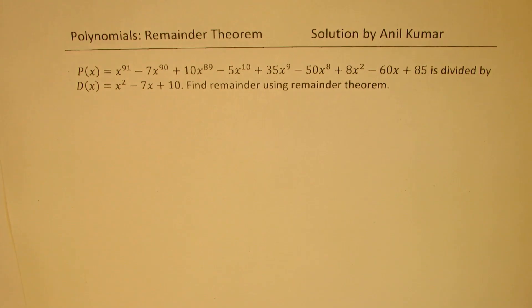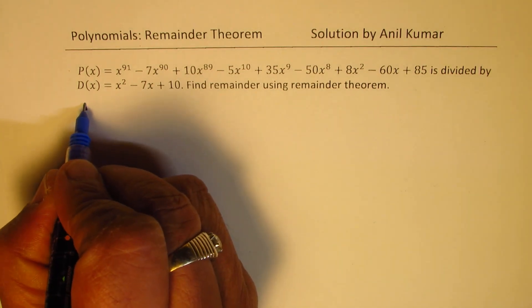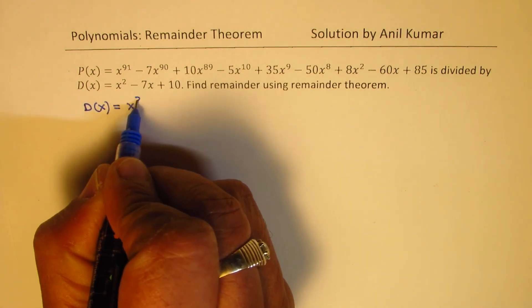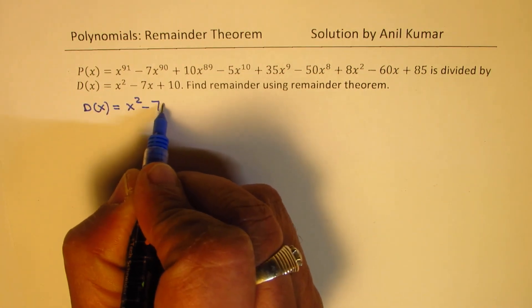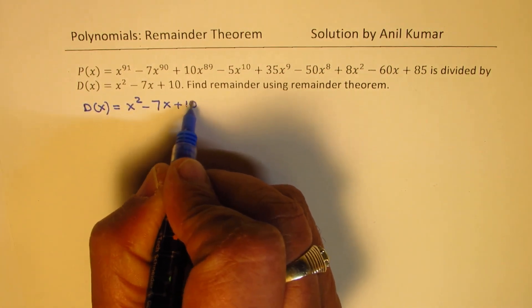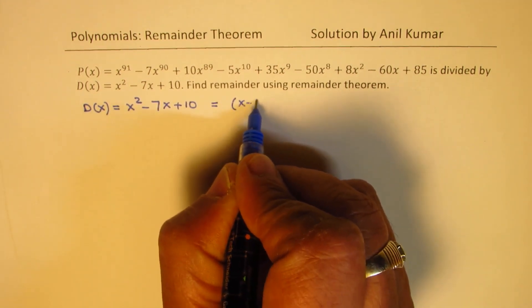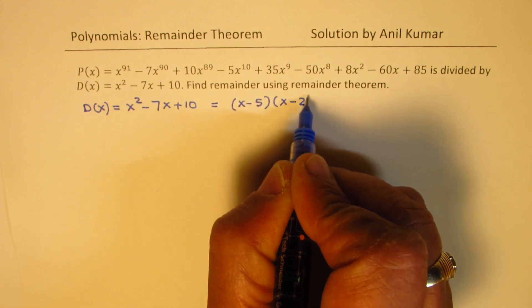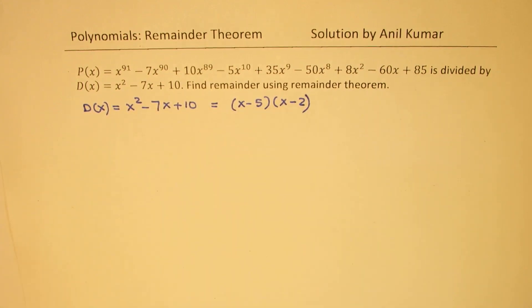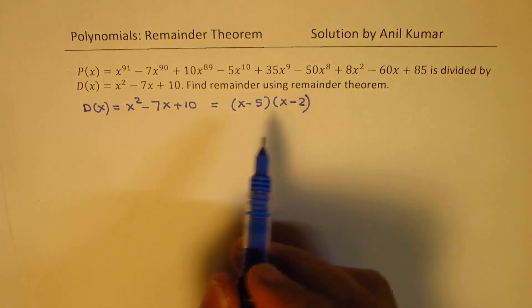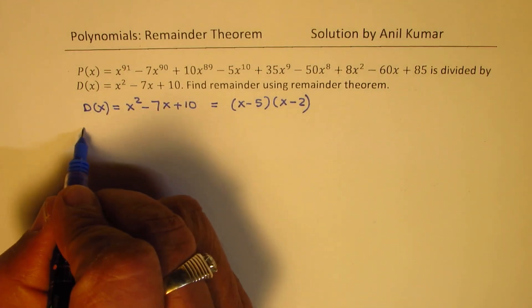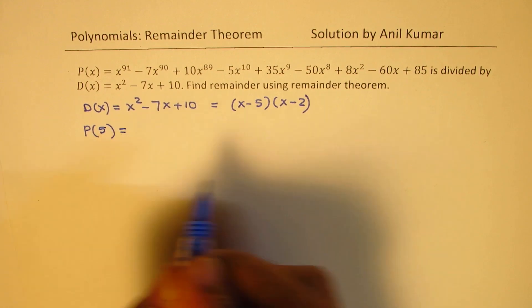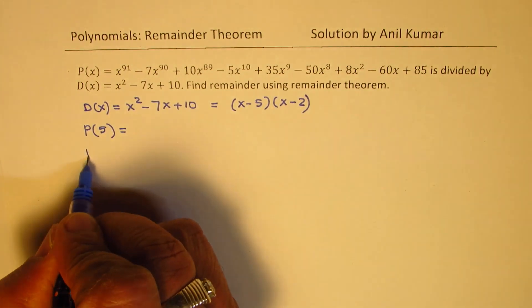Now how do we do this? Well, you notice that the divisor D(x) could be factored and we could write this x squared minus 7x plus 10 as equal to (x - 5)(x - 2). So we can use remainder theorem and find the value of this polynomial for 5 and also for 2.